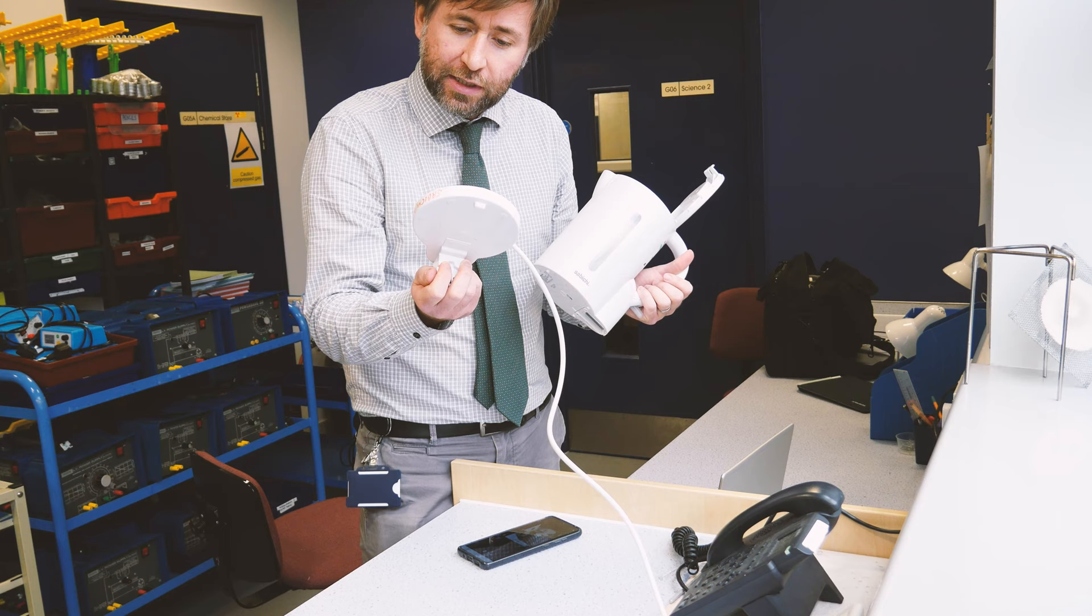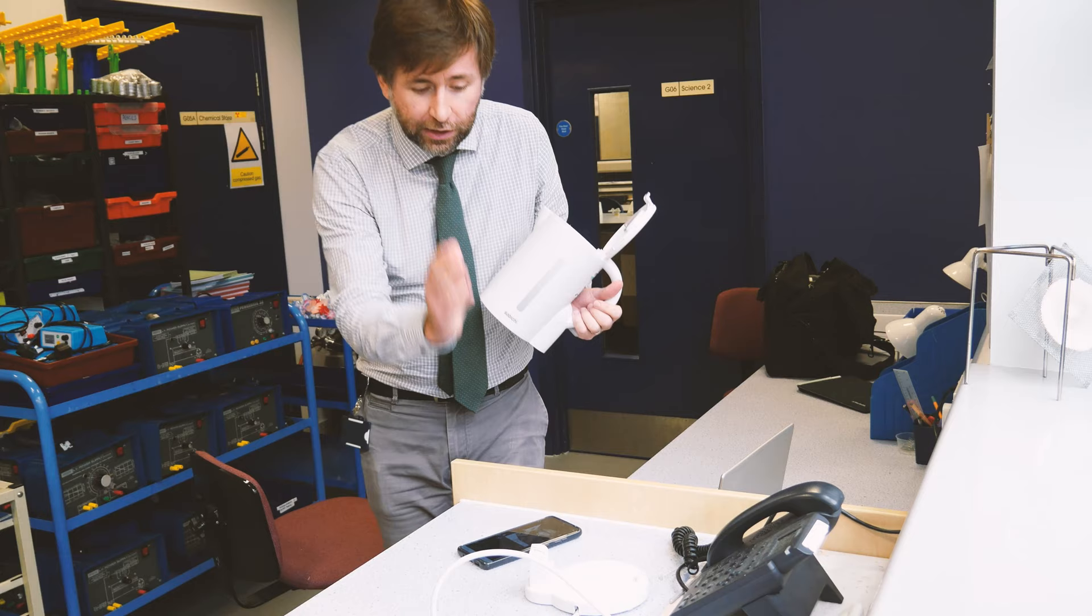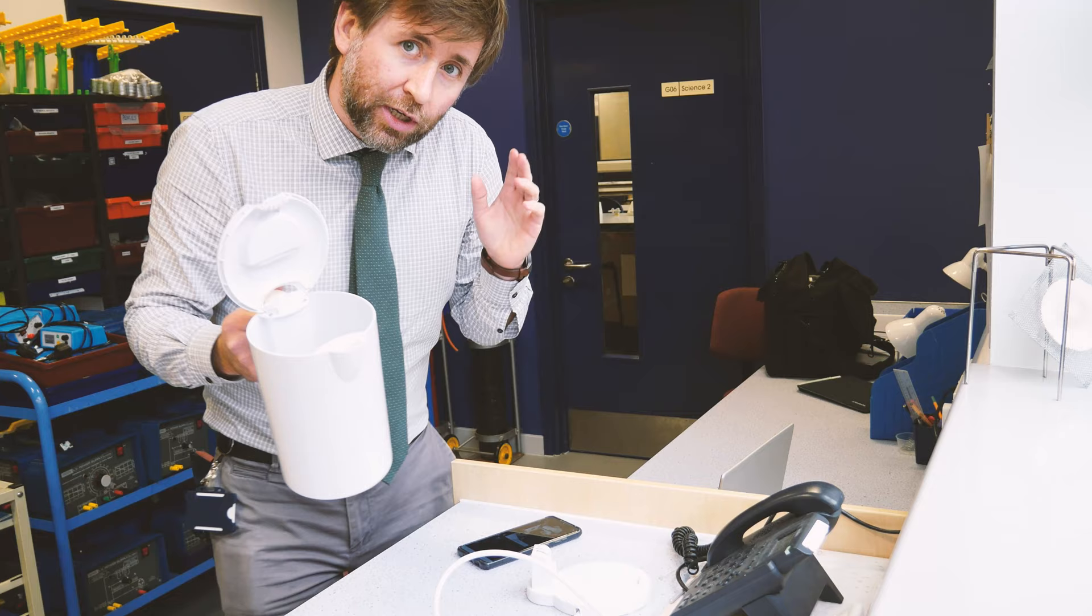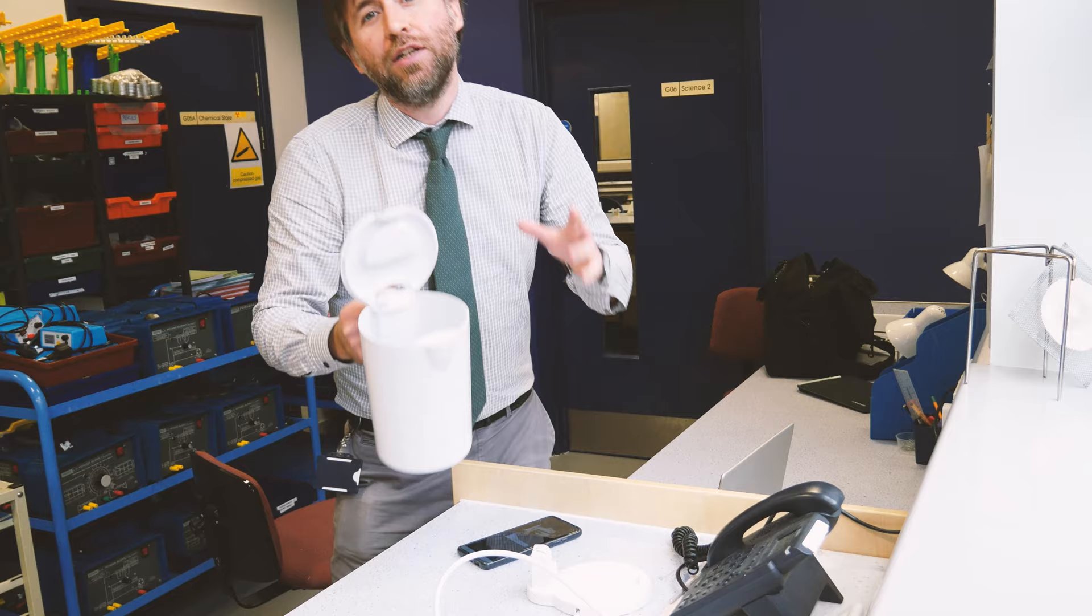I'm just going to call it 2000 watts, 2 kilowatts, and I'm going to use the scale on the side of the kettle, which has half a litre, one litre, and 1.5 litre. I'm going to boil some water from just tap water temperature, which is going to be about room temperature. I'm going to boil it from about 20 degrees to 100 degrees.